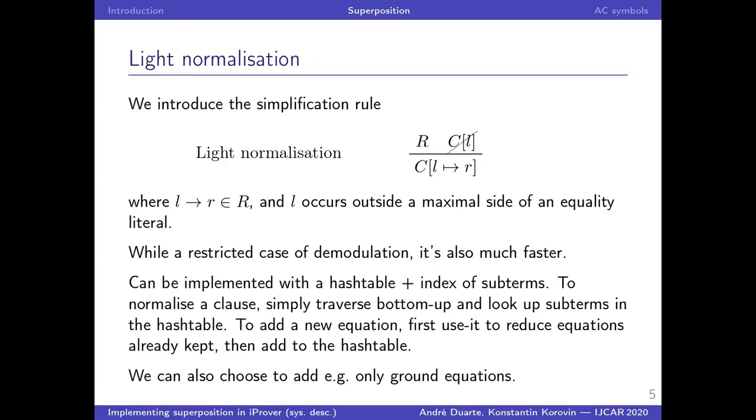So to summarize, compared to full demodulation, light normalization is, of course, weaker, but it enables us to much more quickly find the rewrites for all of the clauses, and also this complexity remains the same, independently of the number of clauses that are in the light normalization set.